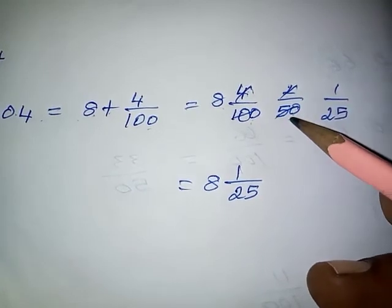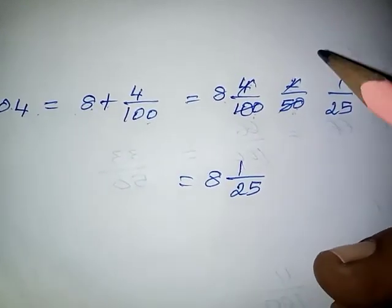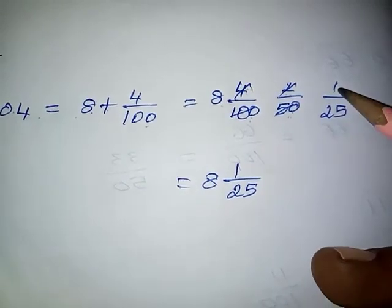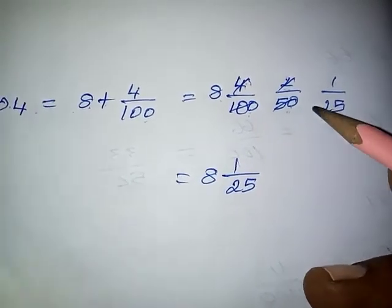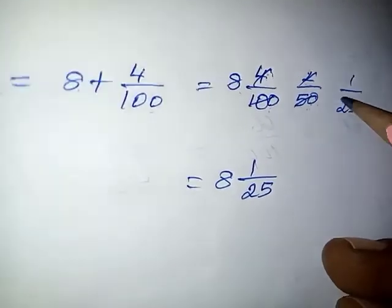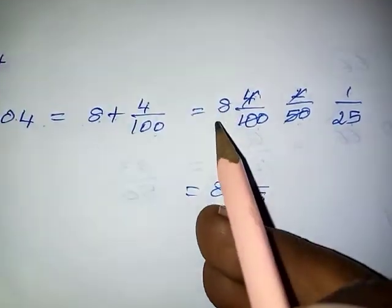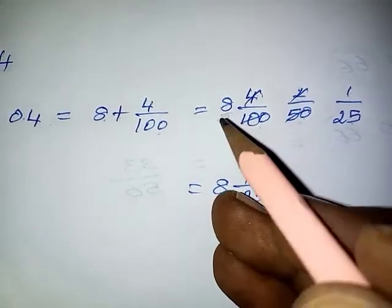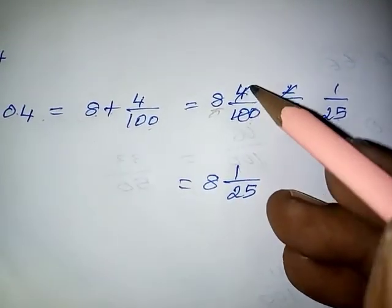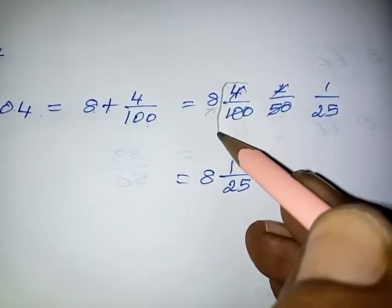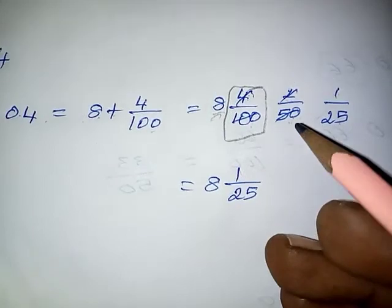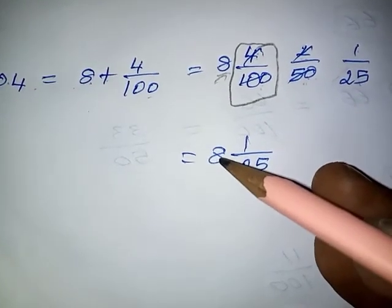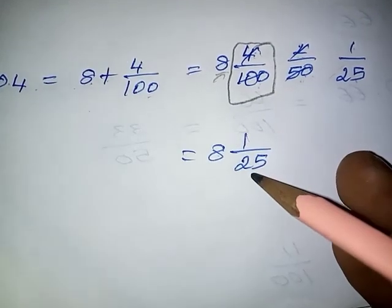Again, 2 and 50 are multiples of 2, so we simplify using the 2 times table again: 1 two is 2 and 25 twos are 50. Note that the integral part 8 is also a multiple of 2, but we only simplify the decimal part of the given decimal. So the final answer is 8 and 1 by 25.